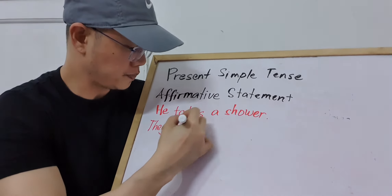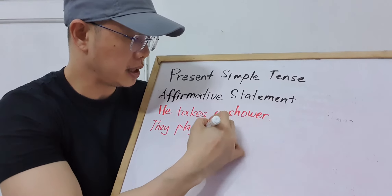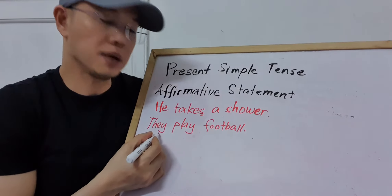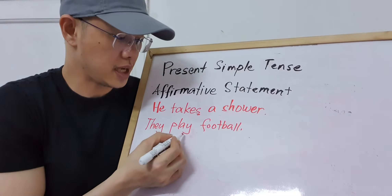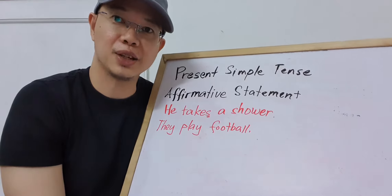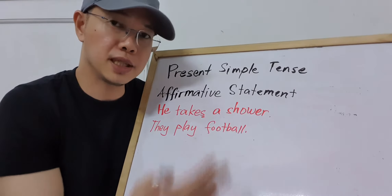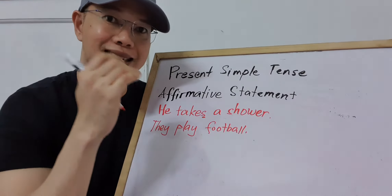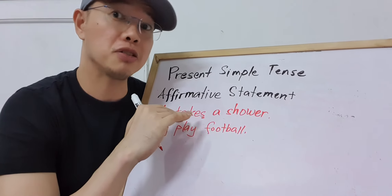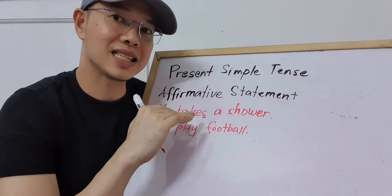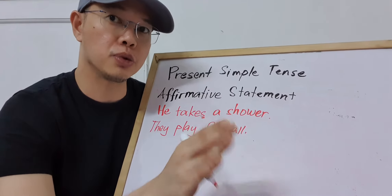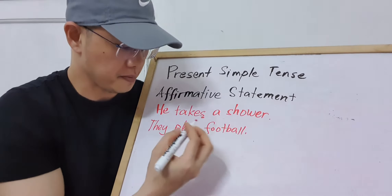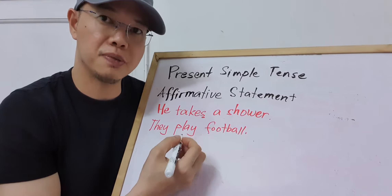The singular subject includes he, she, it — the pronouns he and she. Now let's have an example with a plural subject: 'They play football.' Since your subject is plural, the verb is in the base form. The S form means the verb ends in S, and there are rules for forming it — we have separate videos for that.